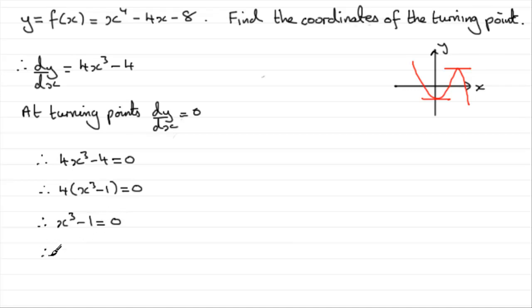And if we add 1 to both sides, we get x cubed equals 1. And if you take the cube root of 1 now to get x, you end up with the cube root of 1 is 1.